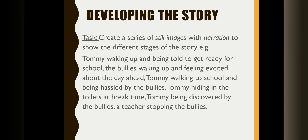Now it's time to develop your story a little bit further. Create a series of still images — between two and three — with narration to show the different stages of the story. For example, your first still image could show Tommy waking up and being told to get ready for school. The second, the bullies waking up and feeling excited about the day ahead. The third, Tommy walking to school and being hassled by the bullies. The fourth, Tommy hiding in the toilets at break time. The fifth, Tommy being discovered by the bullies. And the last one, a teacher stopping the bullies.